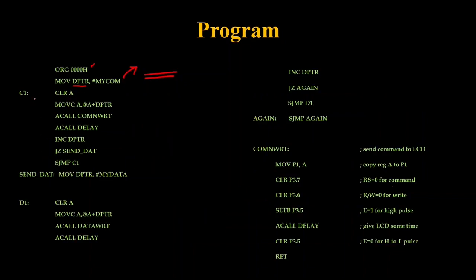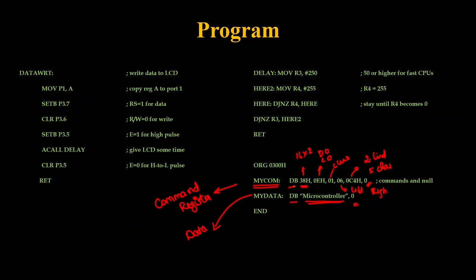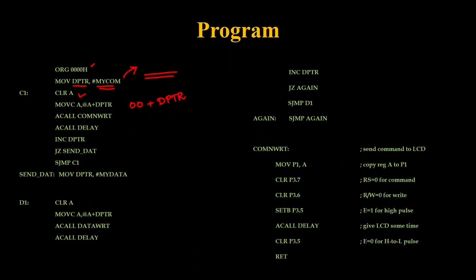At label C1 we clear the accumulator, then execute MOVC A, @A+DPTR. The accumulator gets the value 0x00 because it was cleared, plus DPTR which is currently pointing to MYCOM. So DPTR initially points to the first value 0x38. The value 0x38 is loaded into the accumulator and then we call the COMMAND WORD subroutine. In the previous program we used MOV A, #38H and called the command word subroutine directly.